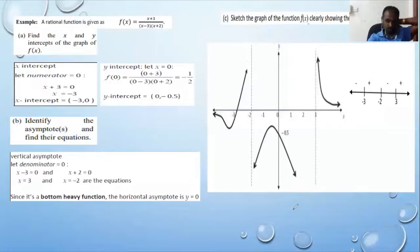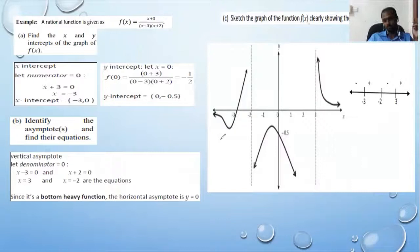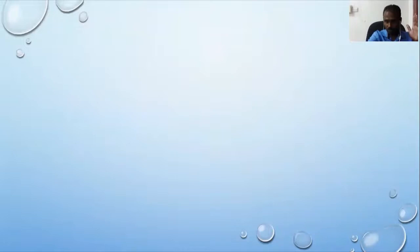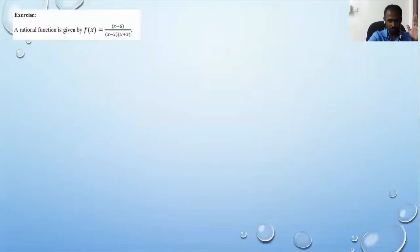Remember: balanced function and bottom-heavy function use similar steps. The only difference is the horizontal asymptote — in a balanced function you divide the coefficients of the highest power to find it, but in a bottom-heavy function the horizontal asymptote is always zero. I hope you're finding the graphs correct. Some of you haven't submitted the second worksheet yet. I won't go over the exercise — that's what you have to do and submit. You can ask me questions now if you have any.